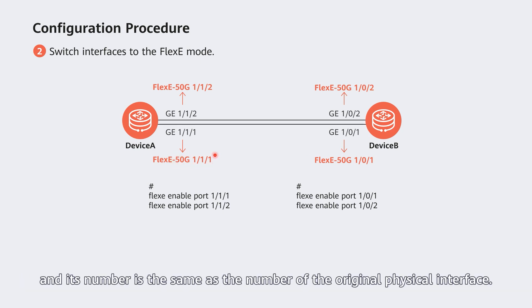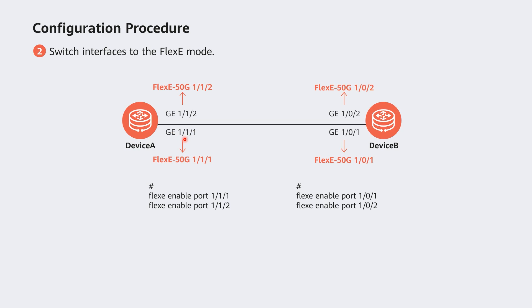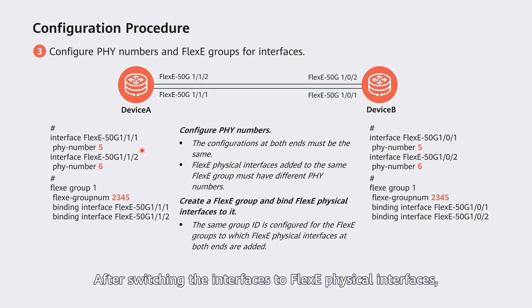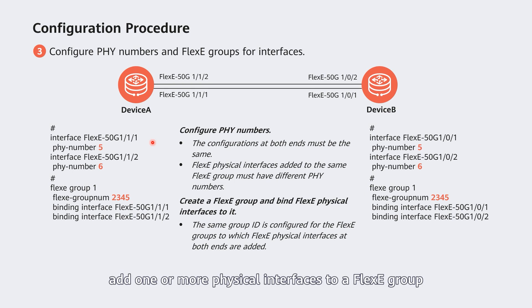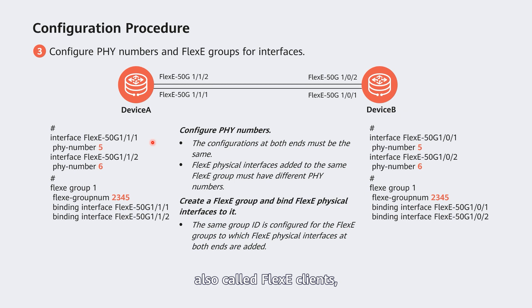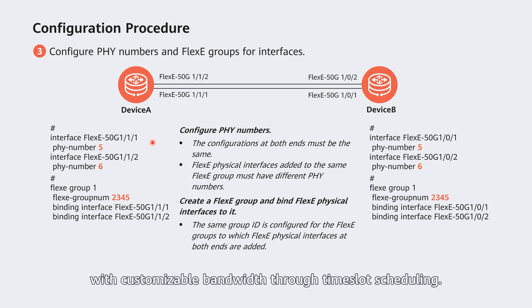The interface number is the same as the number of the original physical interface. After switching interfaces to flexi physical interfaces, flexibly customize them — specifically, add one or more physical interfaces to a flexi group and map the interfaces to multiple flexi logical interfaces, also called flexi clients, with customizable bandwidth through time slot scheduling.